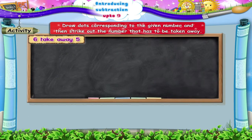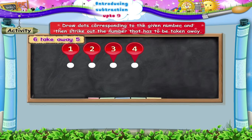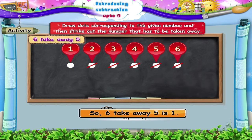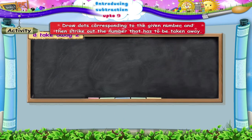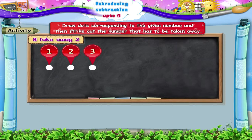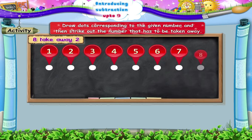Six take away five. One, two, three, four, five, six dots. Eight take away two: one, two, three, four, five, six, seven, eight dots. Strike out one, two dots.